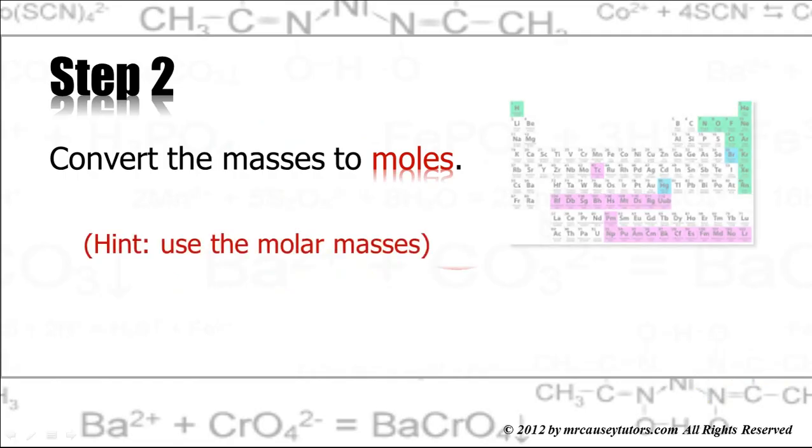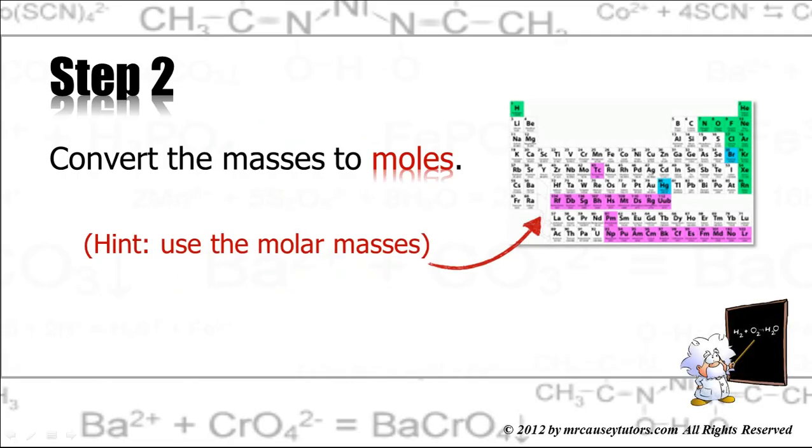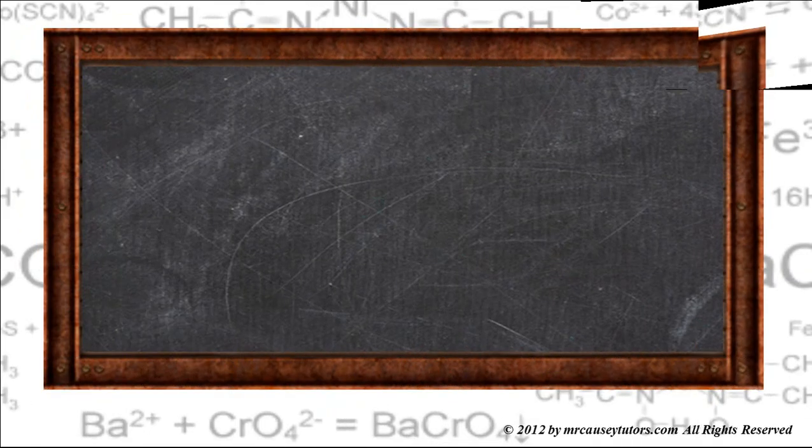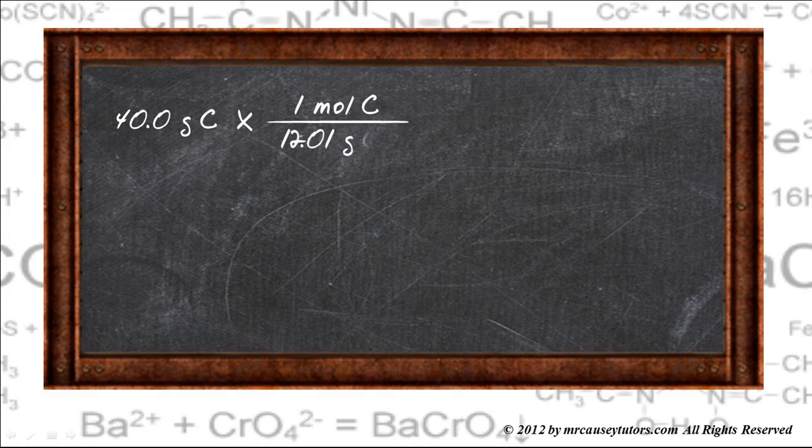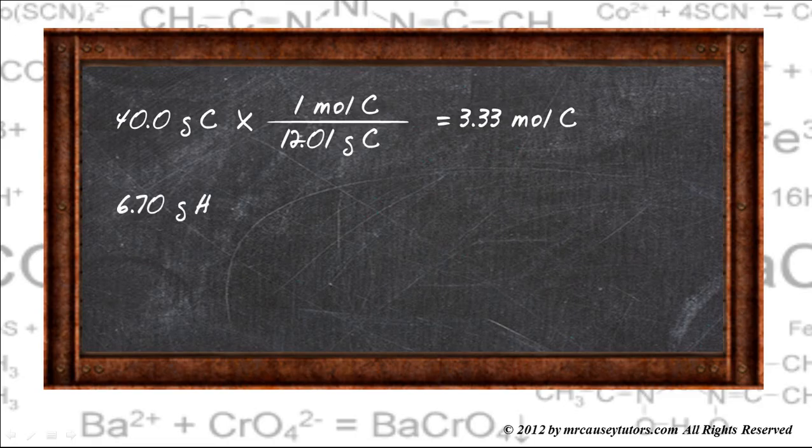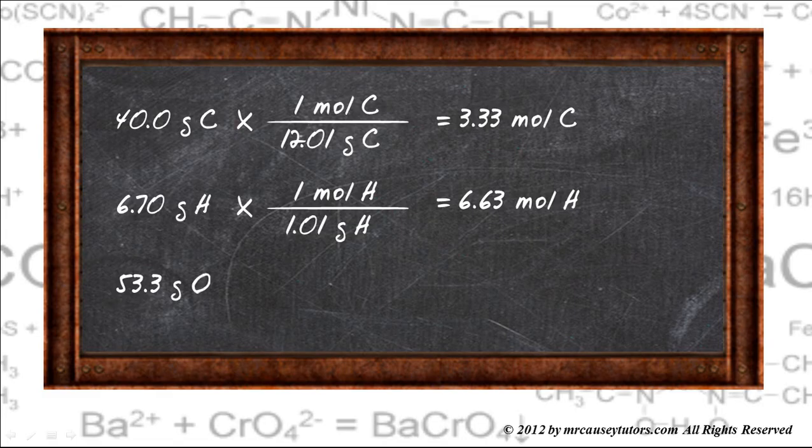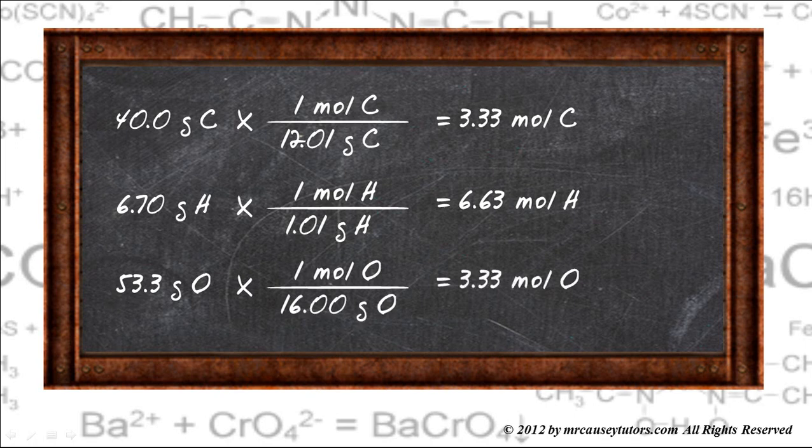Now let's convert the masses to moles. Using the periodic table, we can go and use the molar mass to convert these to moles. So to the blackboard. First thing we do is multiply 40 grams of carbon by its molar mass ratio, and we get 3.33 moles of carbon. Do the same thing to hydrogen. We get 6.63 moles of hydrogen, and then we take oxygen do the same thing, and we get 3.33 moles of oxygen.